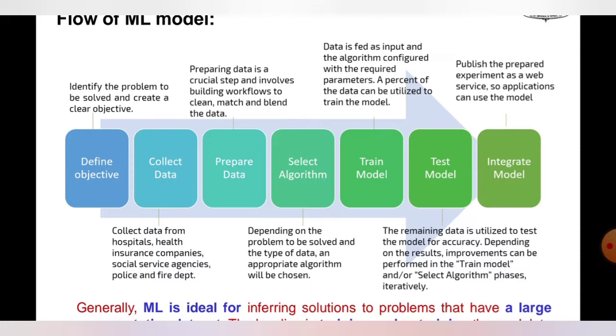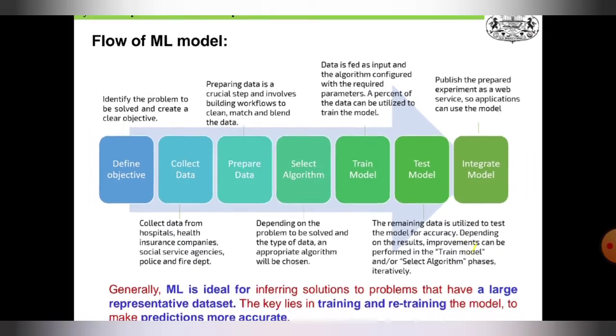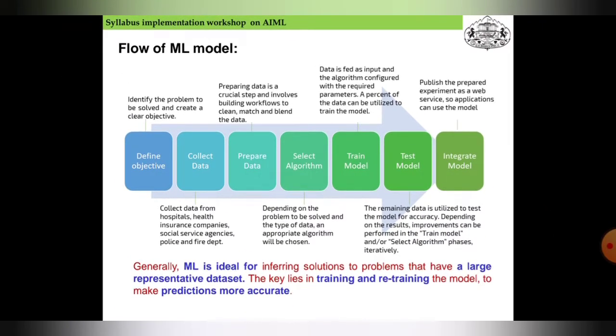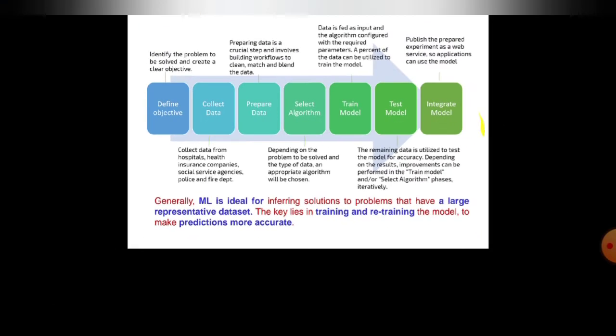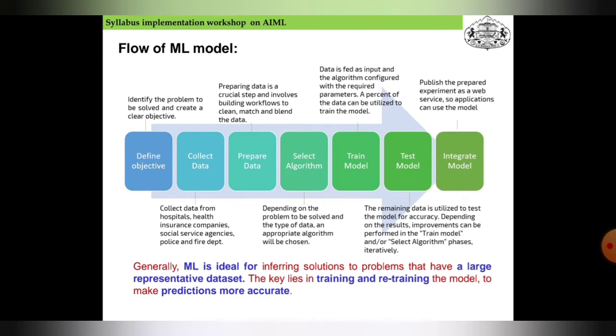After testing the model, integration is done by publishing the experiment as a web service so applications can use the model. Generally, machine learning is ideal for inferring solutions to problems that have large representative datasets. The key lies in training and retraining the model to make more accurate predictions.